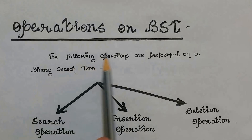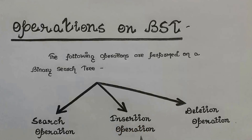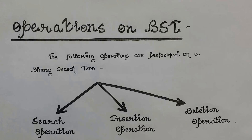Now we have operations on binary search trees. These are the three common operations: the first operation is called search operation, which is performed when we want to search a particular element. The second is called insertion operation, performed when we want to insert a particular element. And the third is called deletion operation, performed when we want to delete a particular element from the binary search tree. We will discuss all three operations one by one in detail.